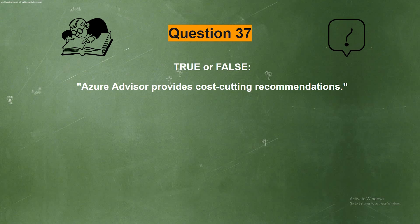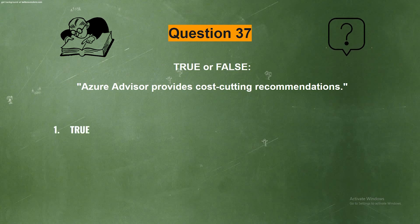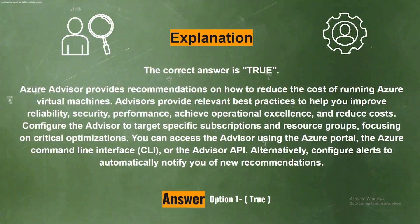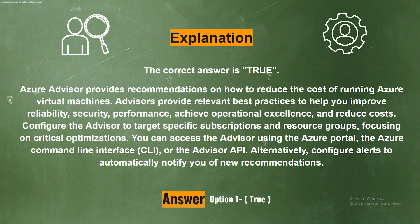Question 37, true or false: Azure Advisor provides cost-cutting recommendations. The options are option one, true; option two, false. The correct answer is option one, true.